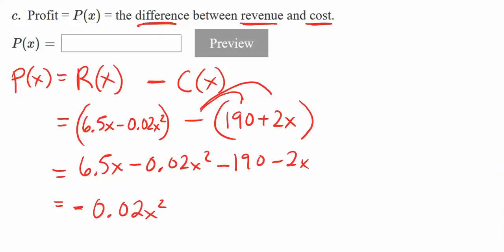We've got some like terms here: 6.5 minus 2, which is positive 4.5. Then we have the constant term, the only one that doesn't have an x or variable next to it. So P(x) equals negative 0.02x squared plus 4.5x minus 190.